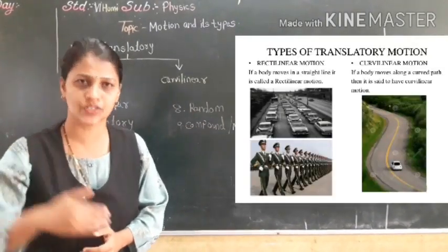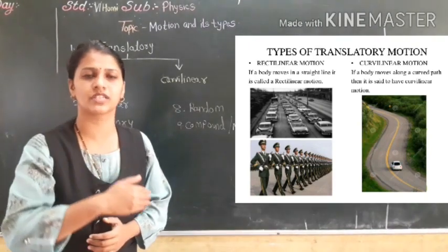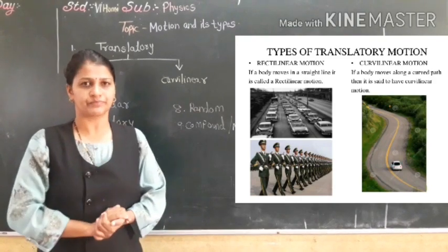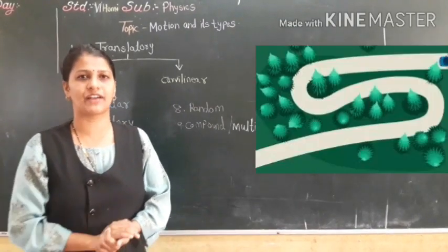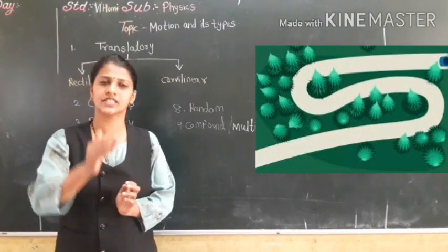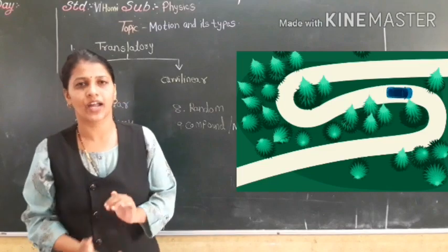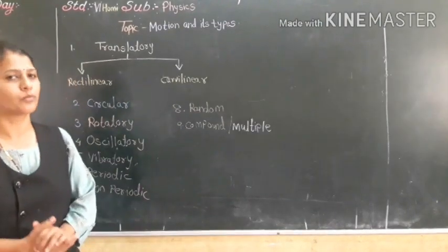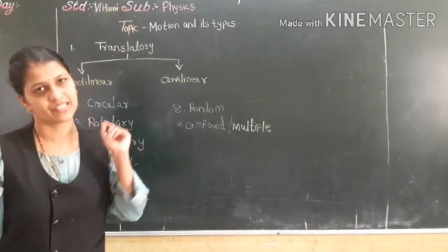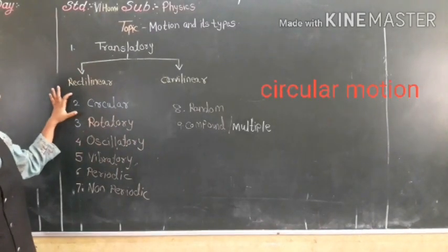Curvilinear motion is when an object moves but takes a curved path. For example, when you are traveling on a hilly section, the car is moving but taking some curved path. That is called curved linear motion. All the definitions are hidden in the words themselves.